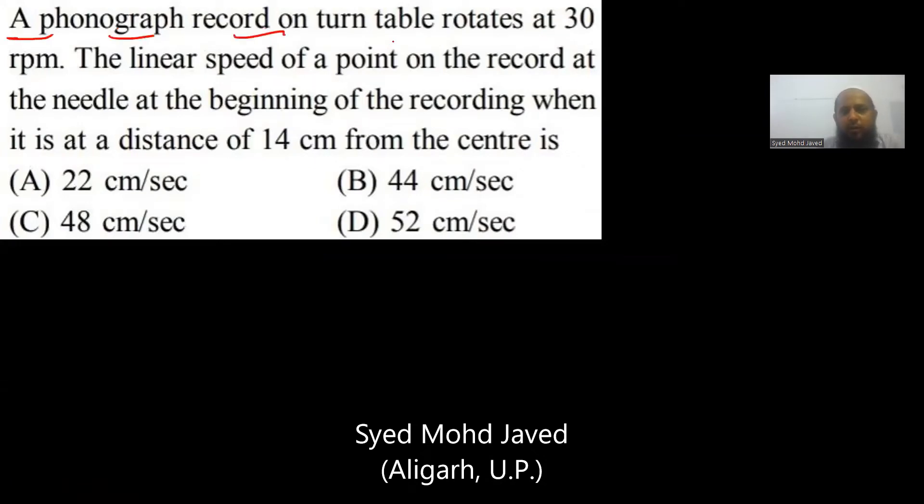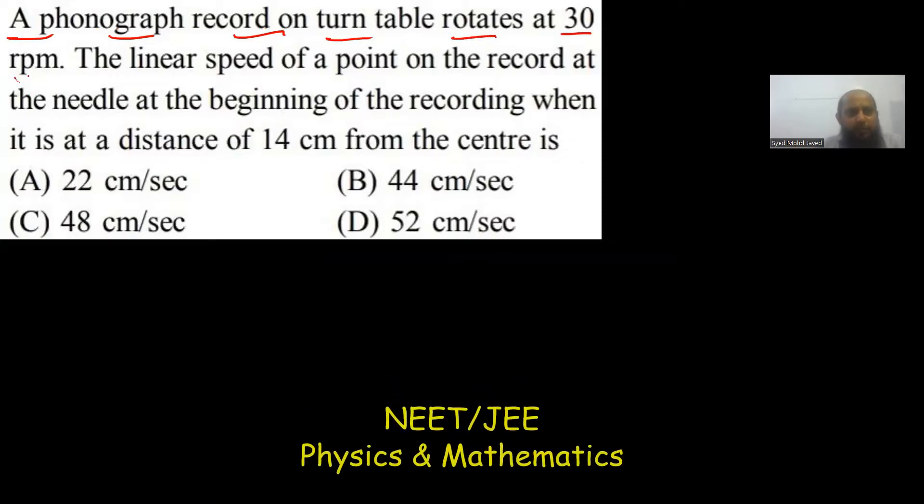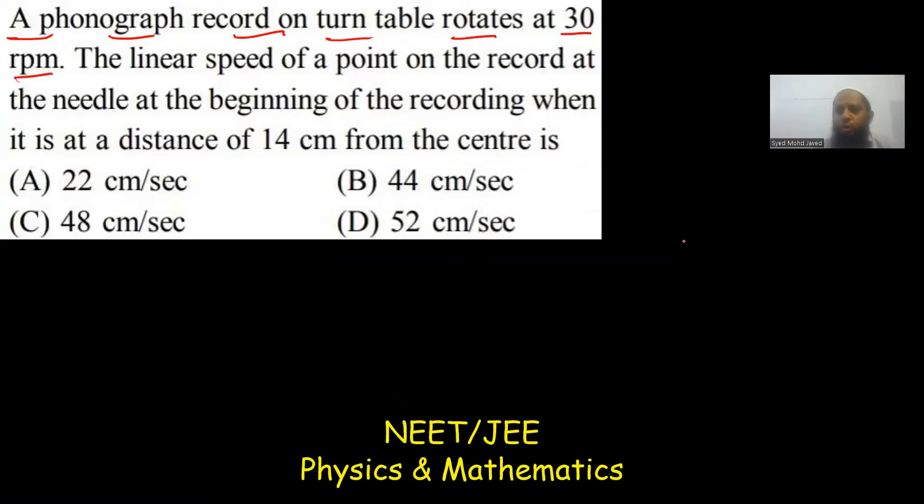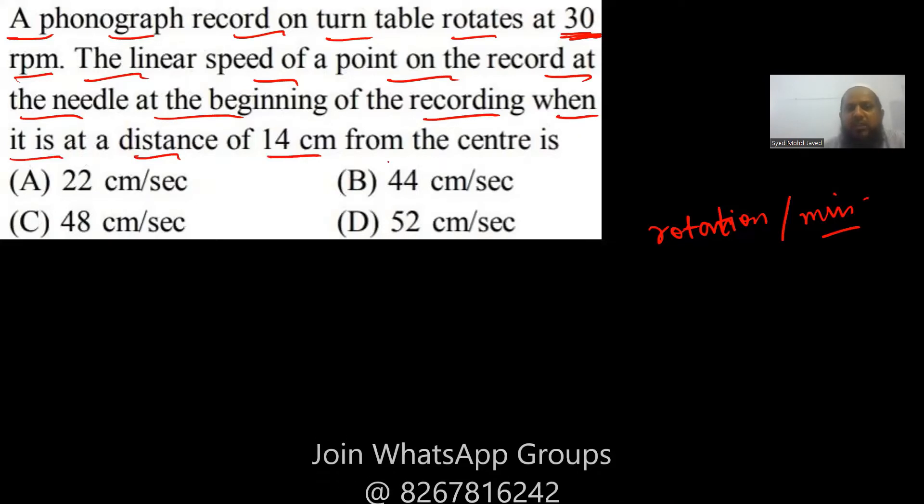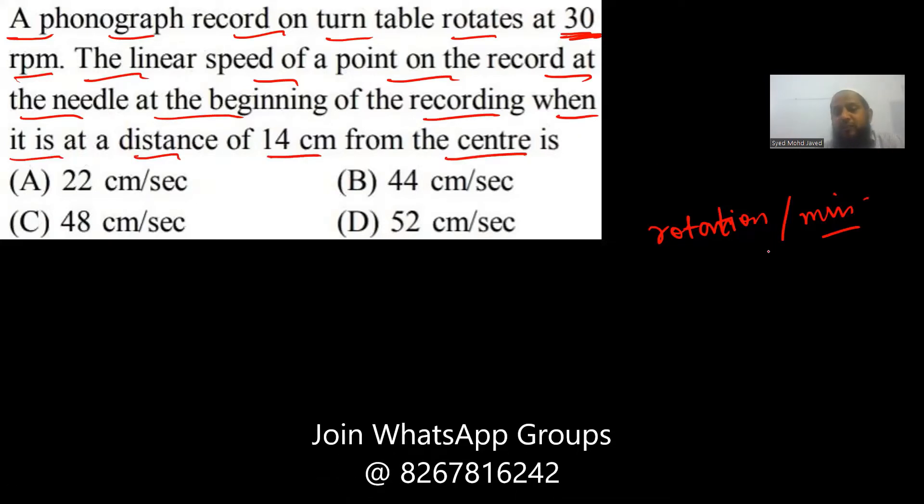A phonograph record on turntable rotates at 30 RPM. RPM means rotation per minute. The linear speed of a point on record at the needle at the beginning of the recording when it is at a distance 14 cm from the center. From the center to 14 cm, the needle is basically the tip.